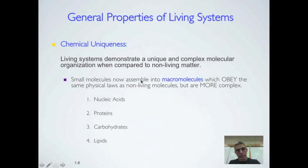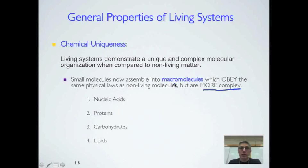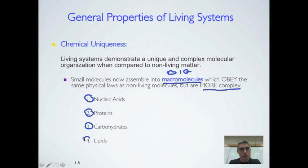The first property we're going to look at is chemical uniqueness. Living systems demonstrate a unique and complex molecular organization when compared to non-living matter. Small molecules assemble into macromolecules, which obey the same physical laws as non-living molecules but are much more complex. The four macromolecules you've seen in biology are nucleic acids, proteins, carbohydrates, and lipids.